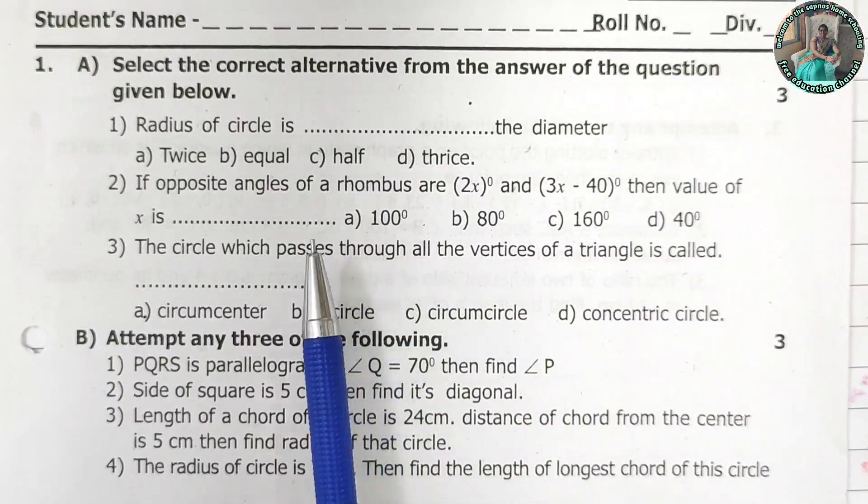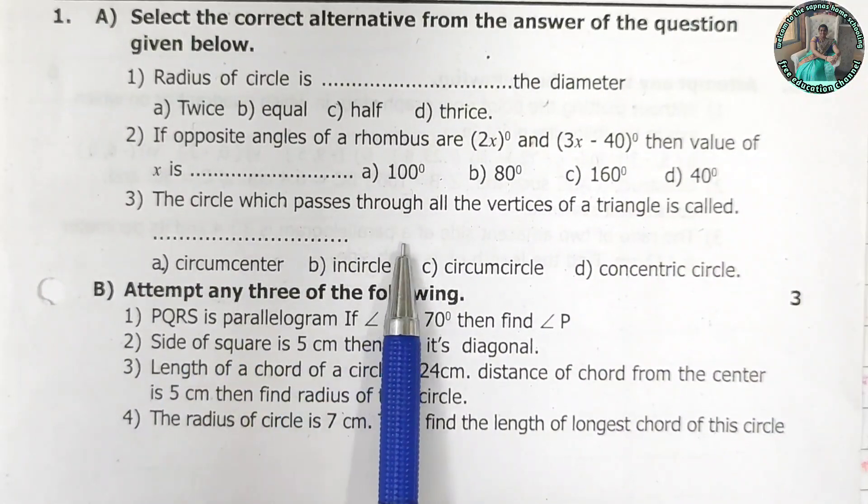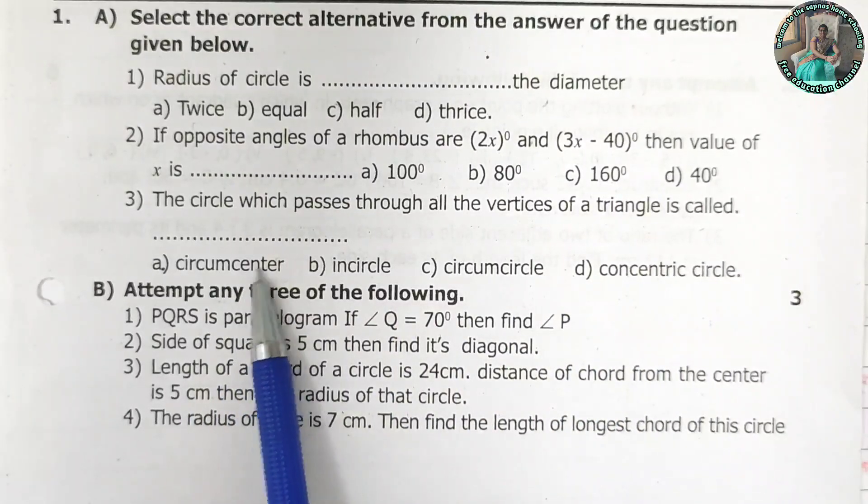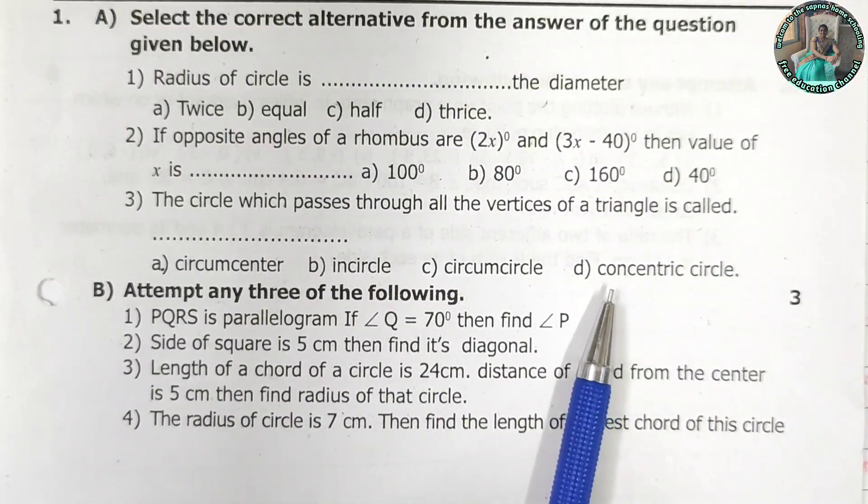The circle which passes through all the vertices of a triangle is called dash dash. Circumcenter in circle, circumcircle ki concentric circle?